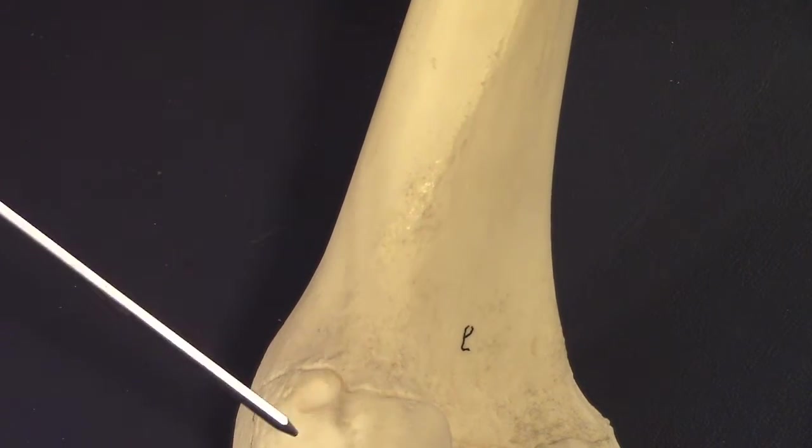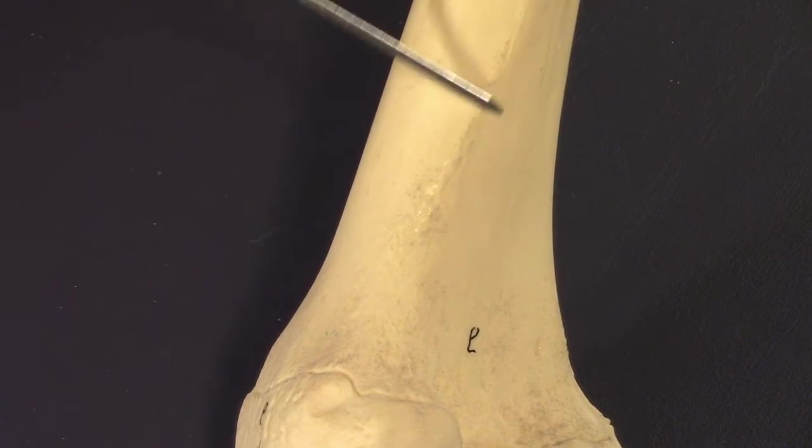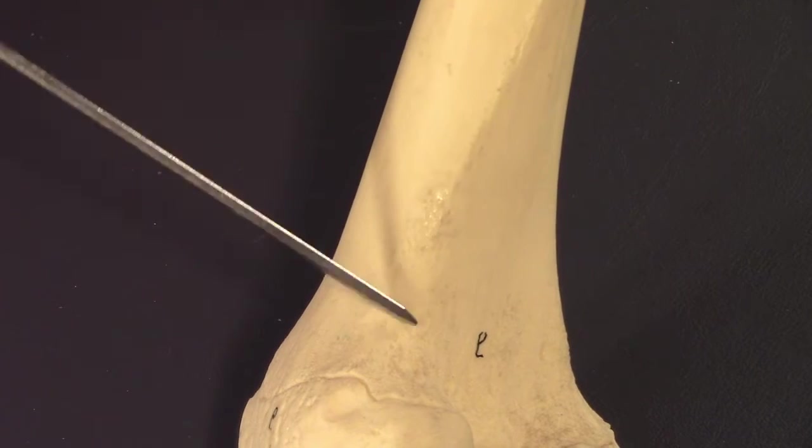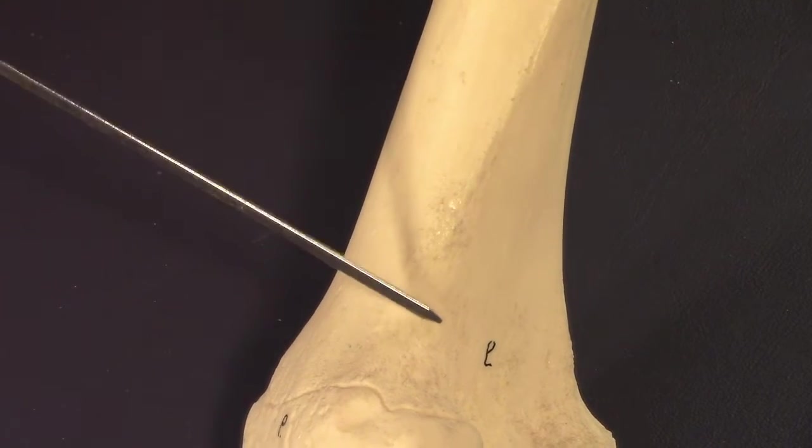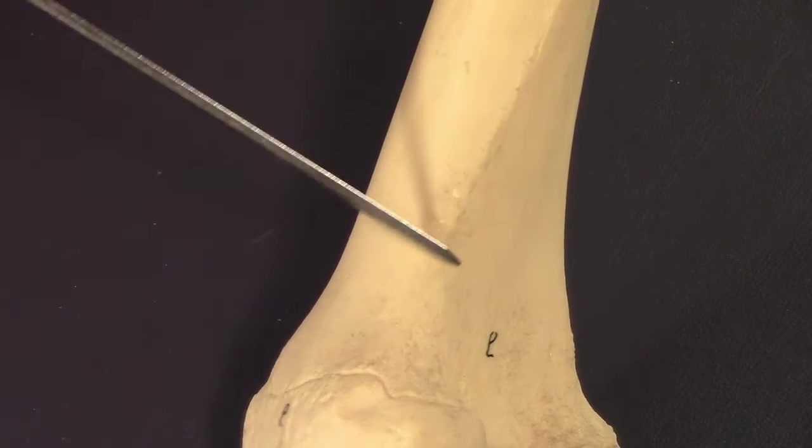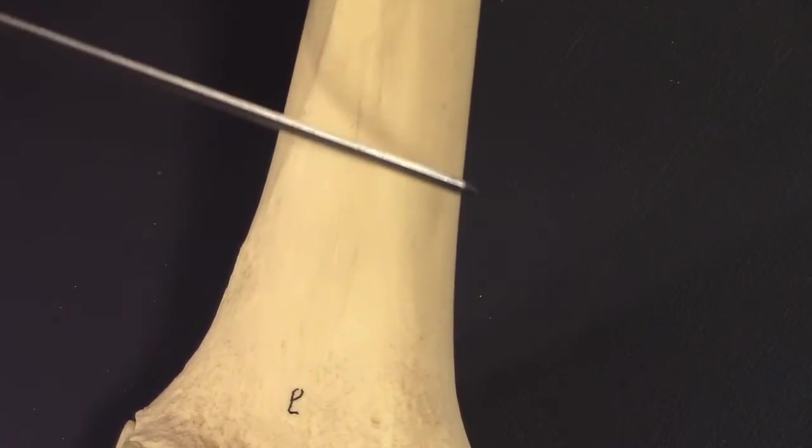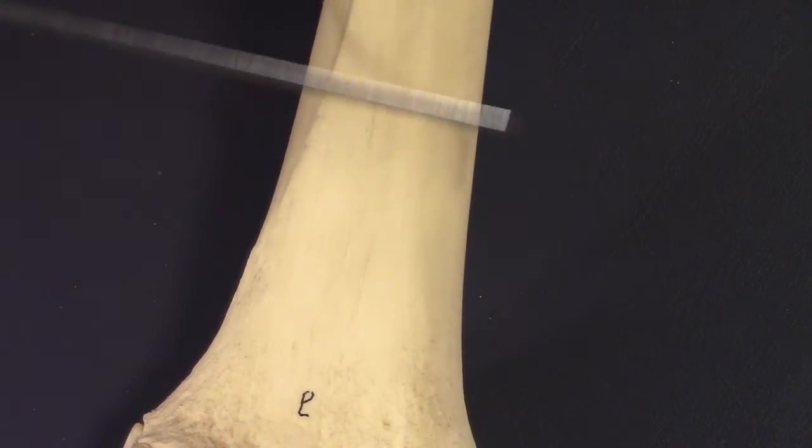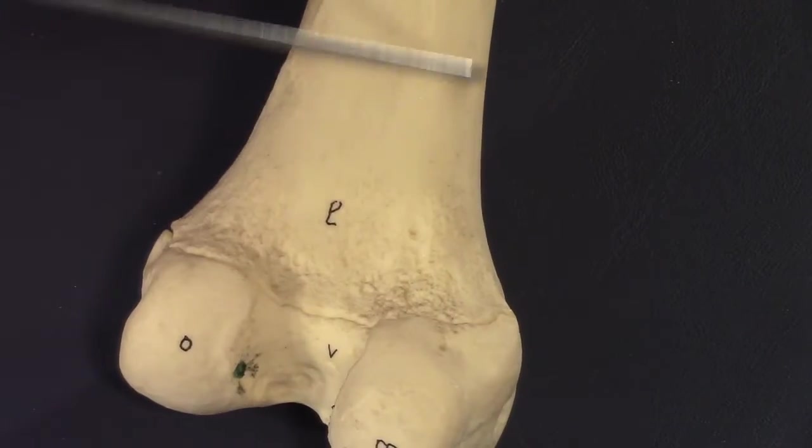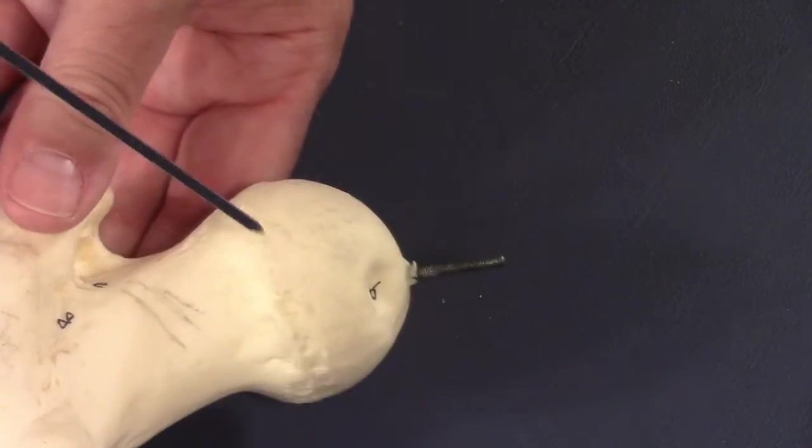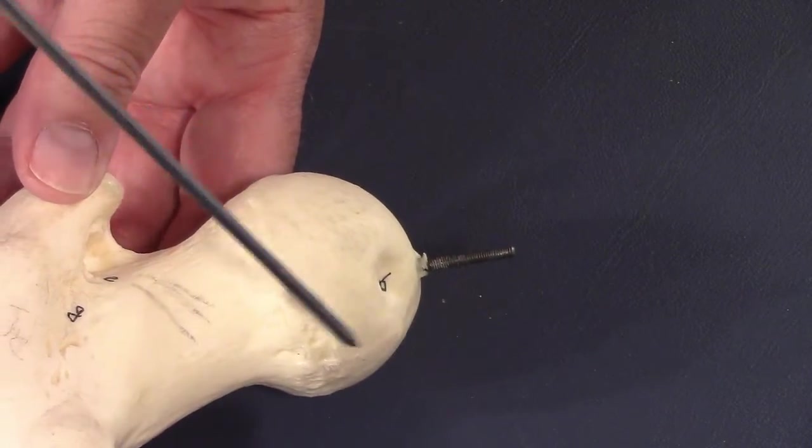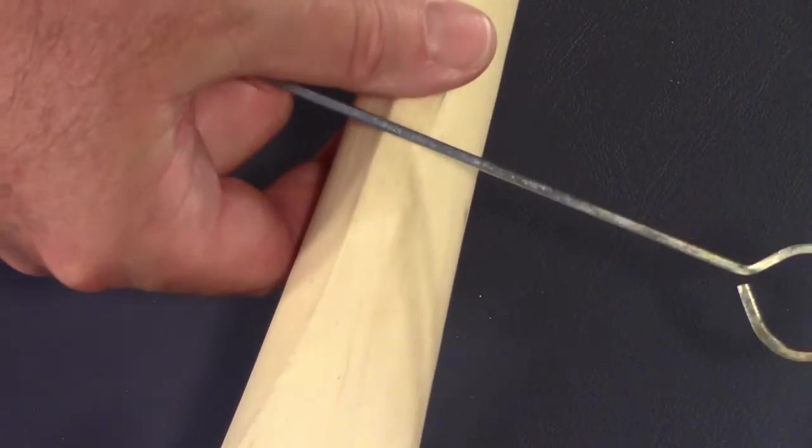Supracondylar line. It comes off the epicondyle. And then on this side, this would be the medial supracondylar line right here. How do I know which way is medial and which way is lateral? Always look for this big guy here. That always points to the medial side, just like the lateral malleolus. You can always tell the lateral part of the leg by that.